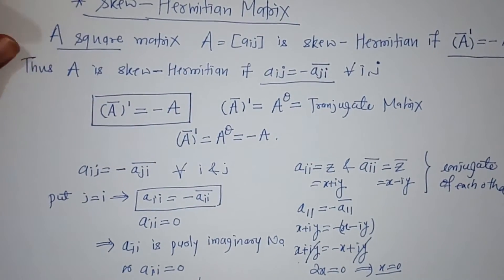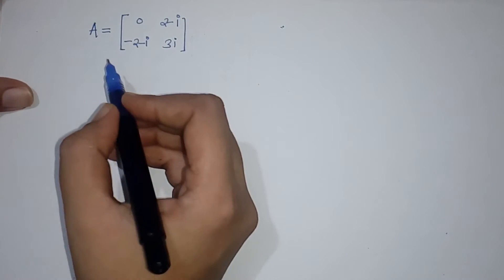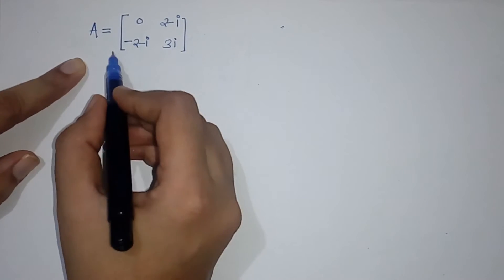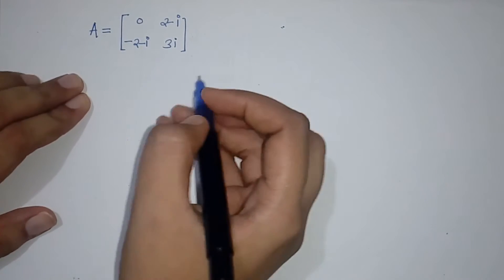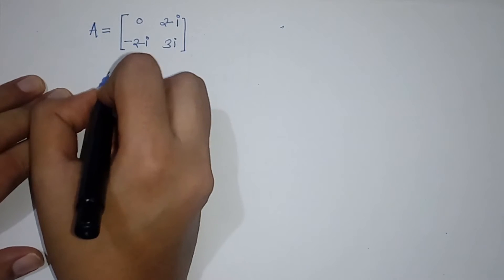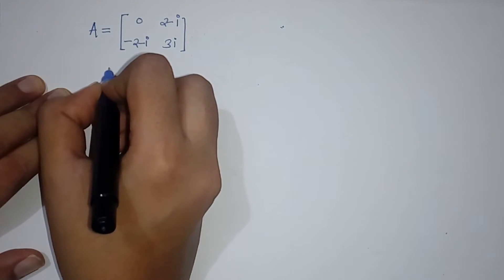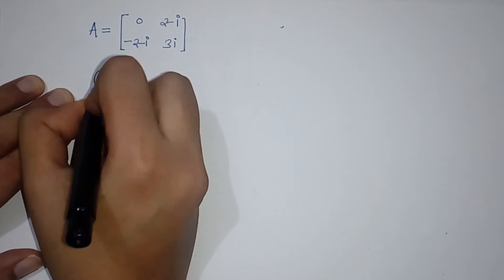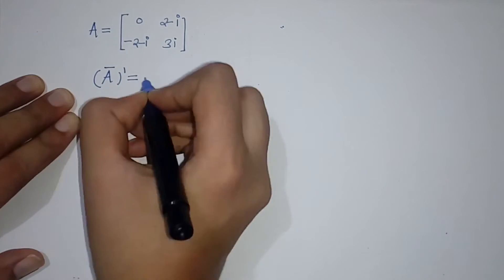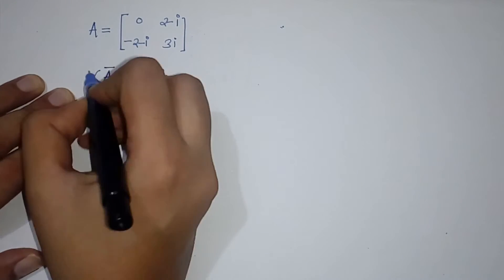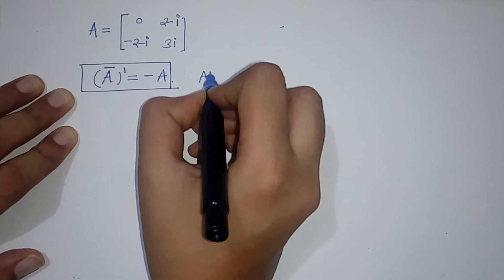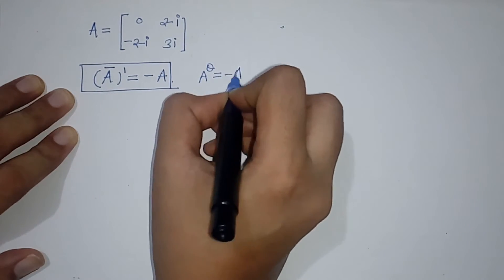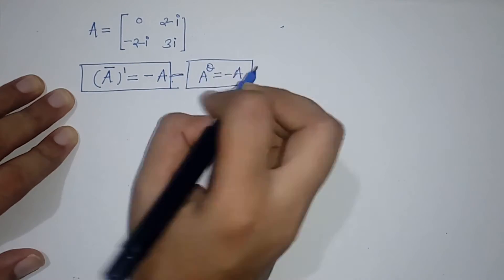Now we will verify this by an example. We will check whether a given matrix A is skew Hermitian or not. We need to verify that the transpose of the conjugate of A equals minus A, or equivalently, A^θ equals minus A. Both expressions are the same.